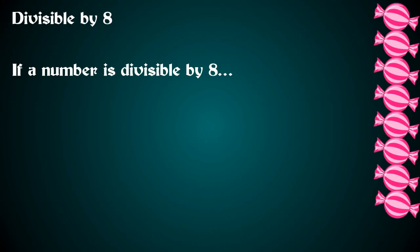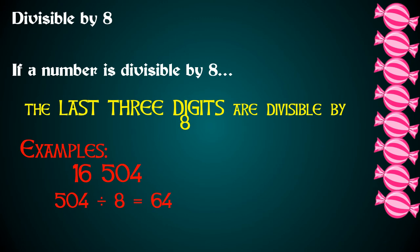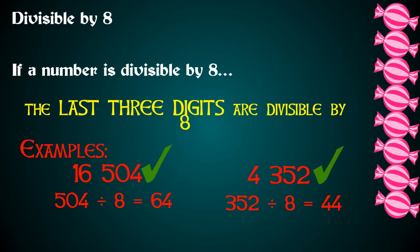What about numbers that are divisible by 8? If a number is divisible by 8, the last three digits are also divisible by 8. Let's look at 16,504. The last three digits are 504. If we divide that by 8, we get 63, so 16,504 is divisible by 8. What about 4,352? If we divide 352 by 8, we get 44, so 4,352 is divisible by 8.